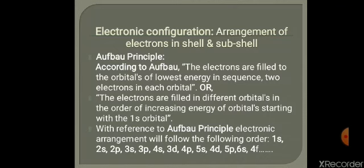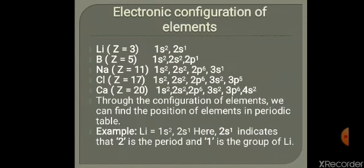Electronic configuration is the distribution or arrangement of electrons in shells. Electrons follow the Aufbau principle — the orbital with the lowest energy is filled first. Some examples: Lithium (atomic no. 3): 1s2 2s1. Boron (atomic no. 5): 1s2 2s2 2p1. Sodium: 1s2 2s2 2p6 3s1. Chlorine: 1s2 2s2 2p6 3s2 3p5. Calcium: 1s2 2s2 2p6 3s2 3p6 4s2.